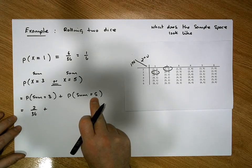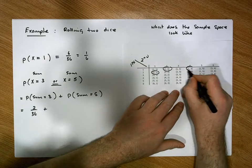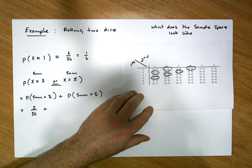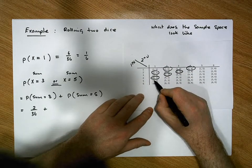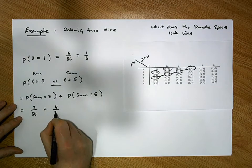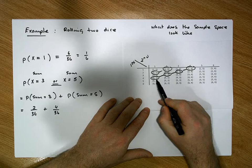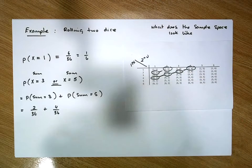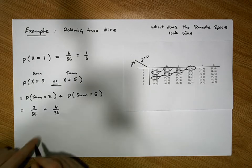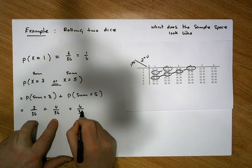What's the probability the sum is five? We have (1,4), (2,3), (3,2), and (4,1) — all give a sum of five — so there are four chances out of 36. Looking at both events, there is no overlap and no double counting, which means the two events are mutually exclusive. The total probability is simply the sum of the individual probabilities: 2/36 + 4/36 = 6/36, which is a one-in-six chance.